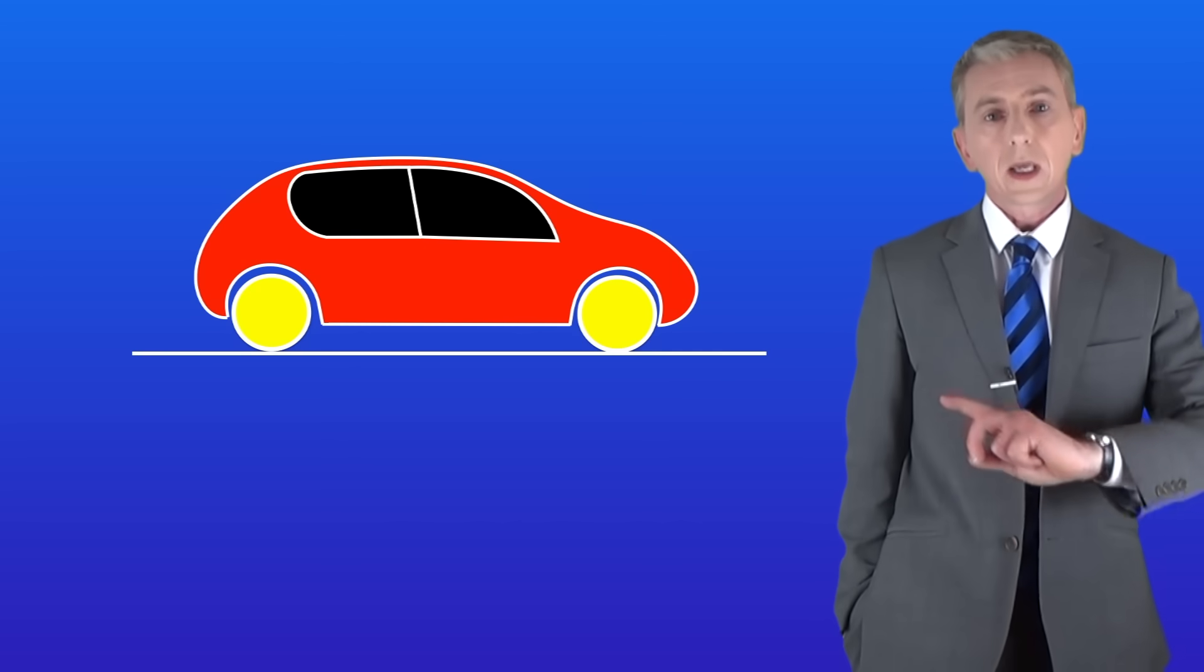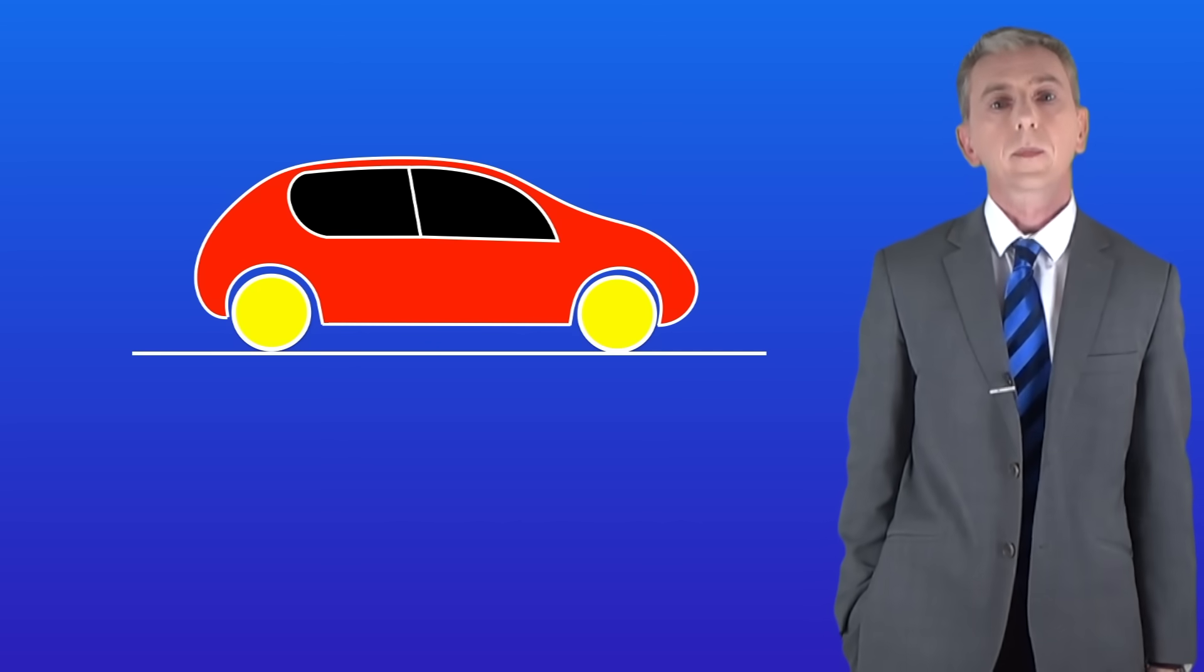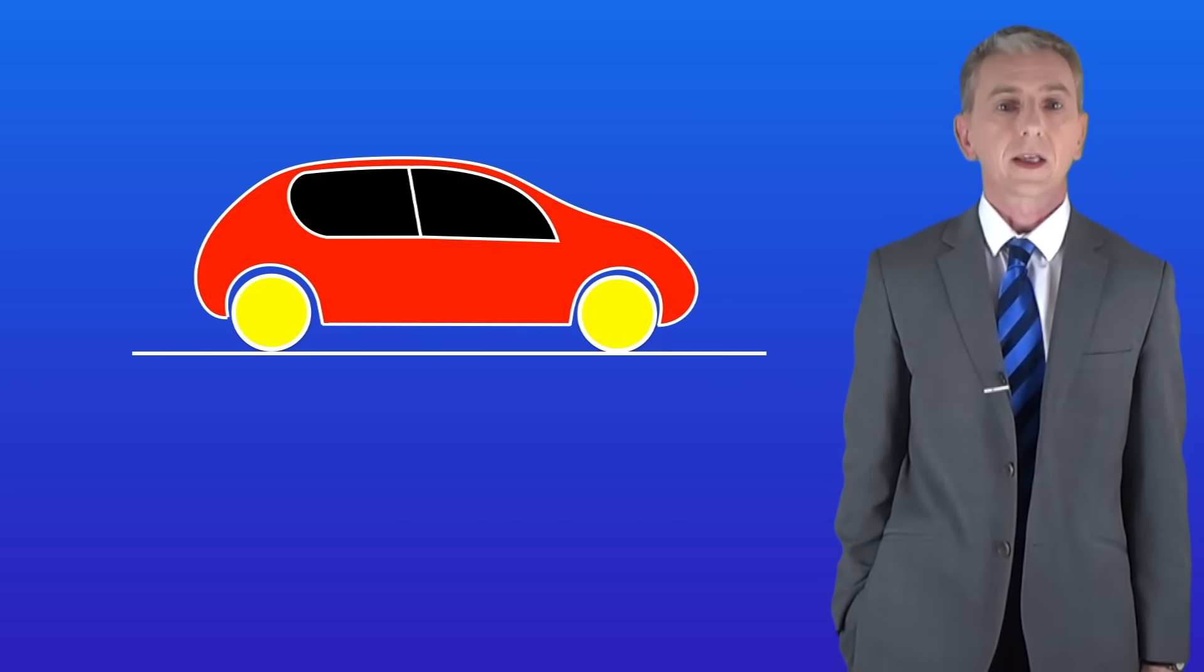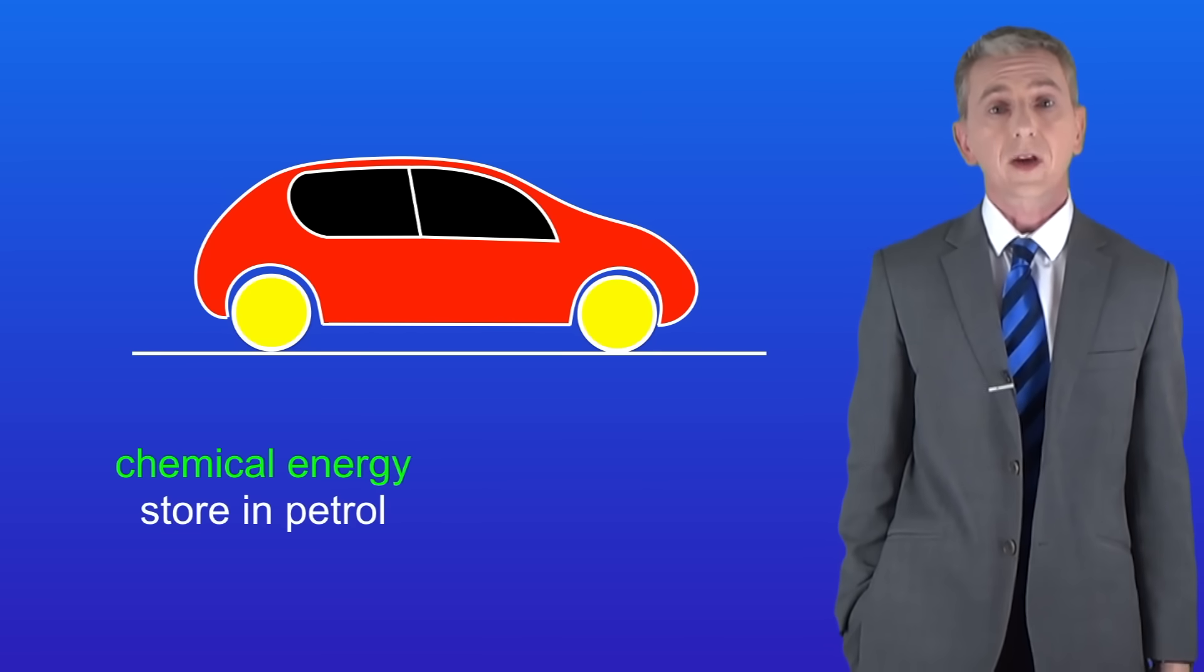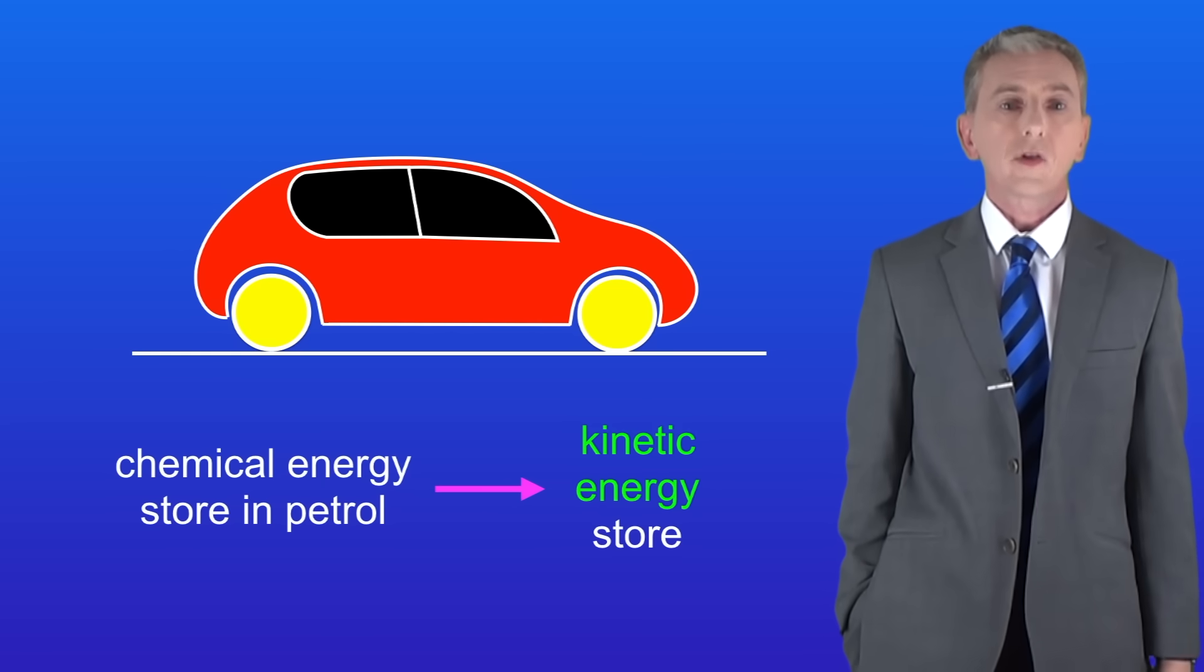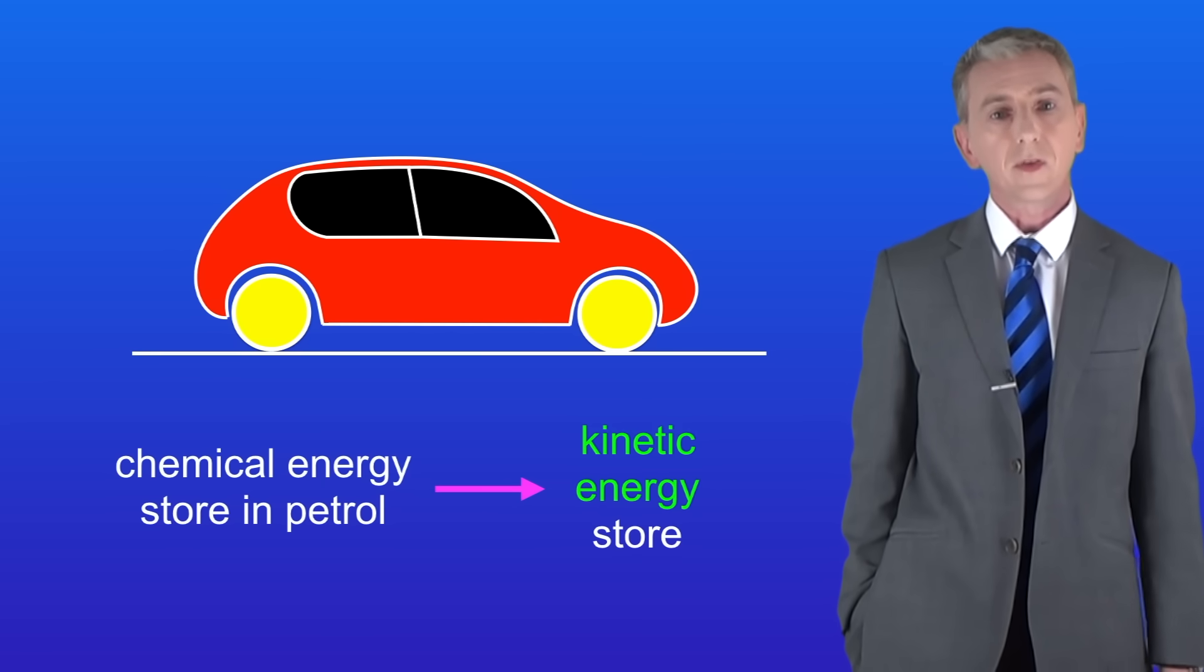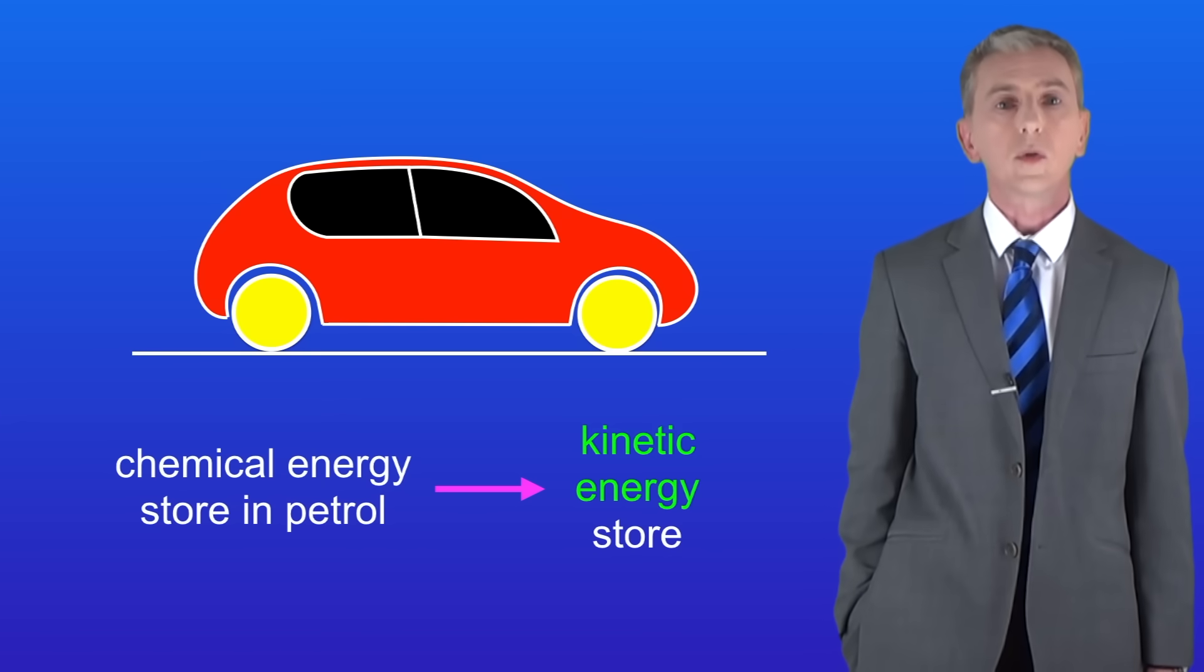So I'm showing you here a car traveling at a constant speed. Let's take a look at the energy changes taking place. The car runs on petrol and that's a store of chemical energy. A chemical reaction takes place in the engine and some of the energy is converted to kinetic energy stores as the car moves.